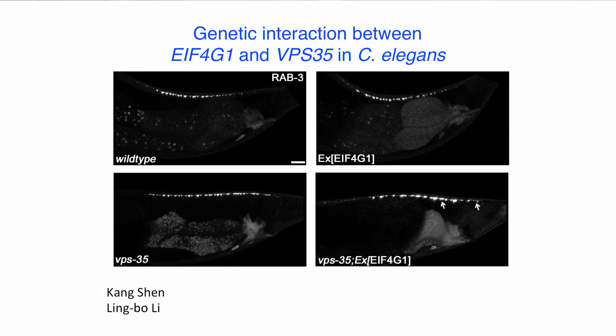Synapses formed as expected in wild-type worms, in VPS35 mutant worms, and in worms that Lingbo had generated to upregulate human EIF4G1. However, when she upregulated EIF4G1 in VPS35 mutant worms, she saw defects in the positioning, size, and number of synapses. These results demonstrate that the genetic interaction between VPS35 and EIF4G1 that Nipesh had found in yeast worked in a similar way in the nervous system.